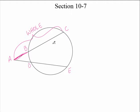What would the whole thing be? As far as our letters are concerned, what would the whole thing be? AC. So I take the whole thing, multiply it by the outside segment, which would be what? AB. Now, what do you think we're going to do on the other one? Same exact thing. Let's take the whole thing on the other secant. What's the whole thing over here? AE. Good. Times the outside segment, which is AD. Good.